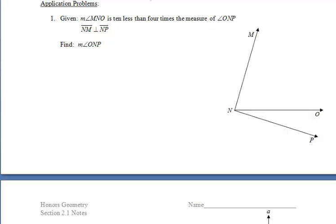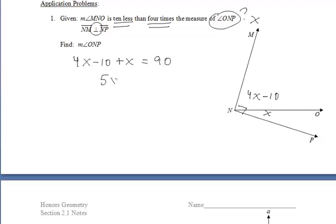Let's take a look at some application problems. So for this, I tell you that angle MNO is ten less than four times the measure of angle ONP. And we know that we have some perpendicular segments. Well, angle MNO depends on angle ONP. We don't know what angle ONP measures, so I'm going to call it x. But since angle MNO is ten less than four times the measure of angle ONP, we can call angle MNO 4x minus ten.